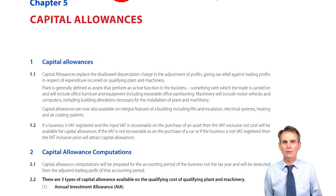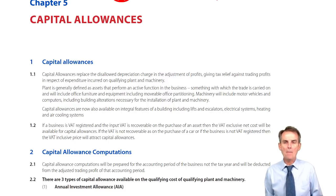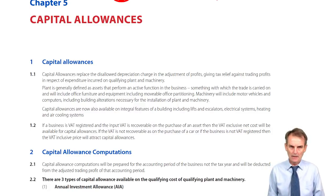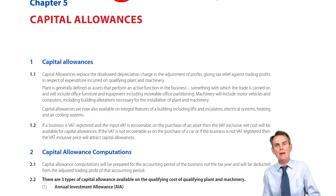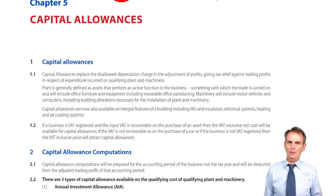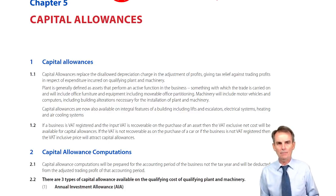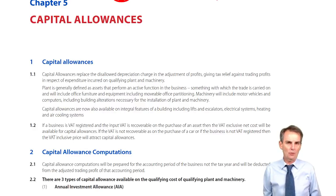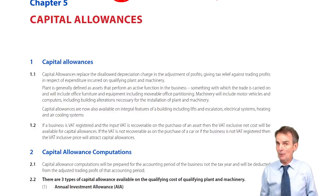We will only be able to claim capital allowances on qualifying plant and machinery. For example, should the business purchase a building for use within the trade, the capital cost of that building is not plant and machinery, and therefore does not attract capital allowances. You'll get tax relief for that expenditure — that capital cost of the building purchased — not through the capital allowances system, but eventually when the business property is sold.